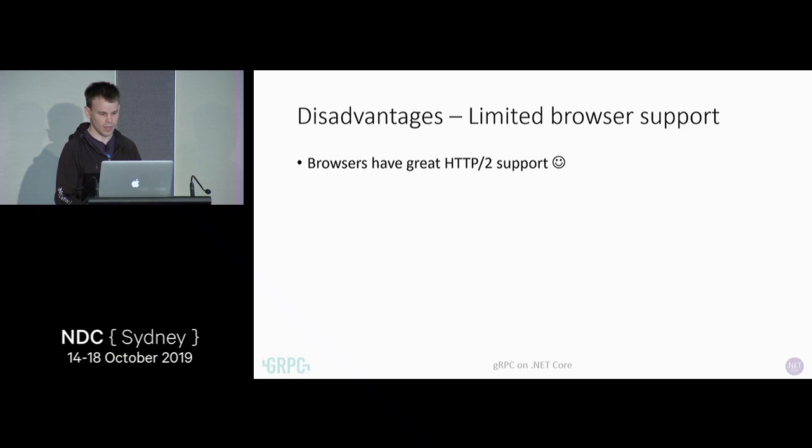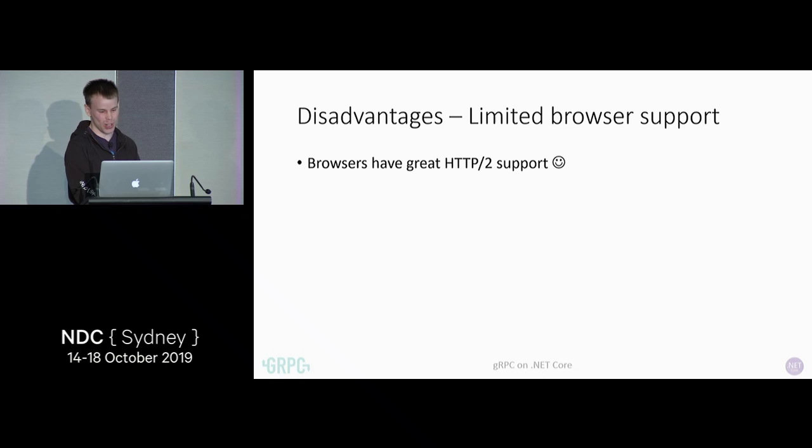I've said a lot of great things about gRPC. Why aren't we using it everywhere? Why don't we just throw JSON away? While browsers have really good HTTP/2 support — chances are if you've got a browser open browsing to Google, Facebook, or Stack Overflow, you're probably already using HTTP/2.